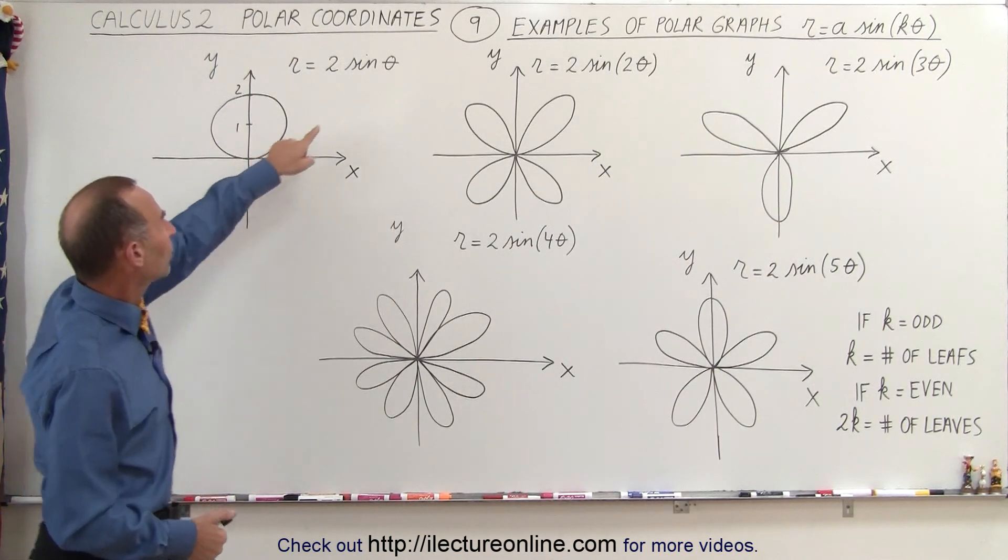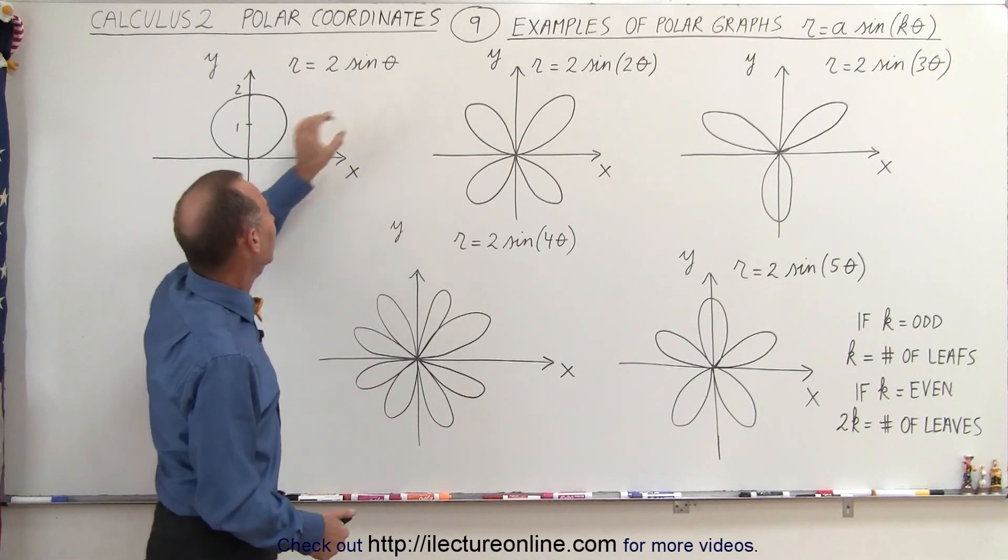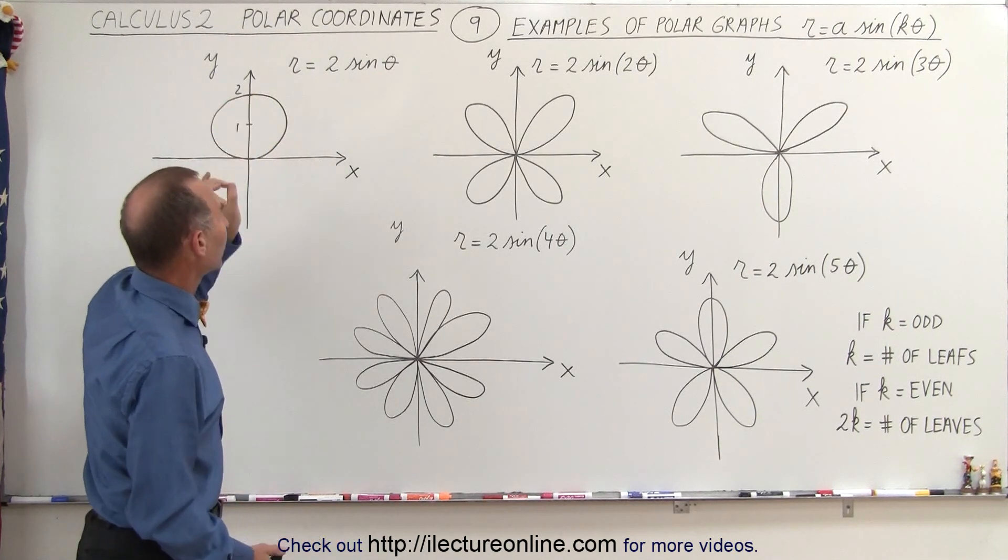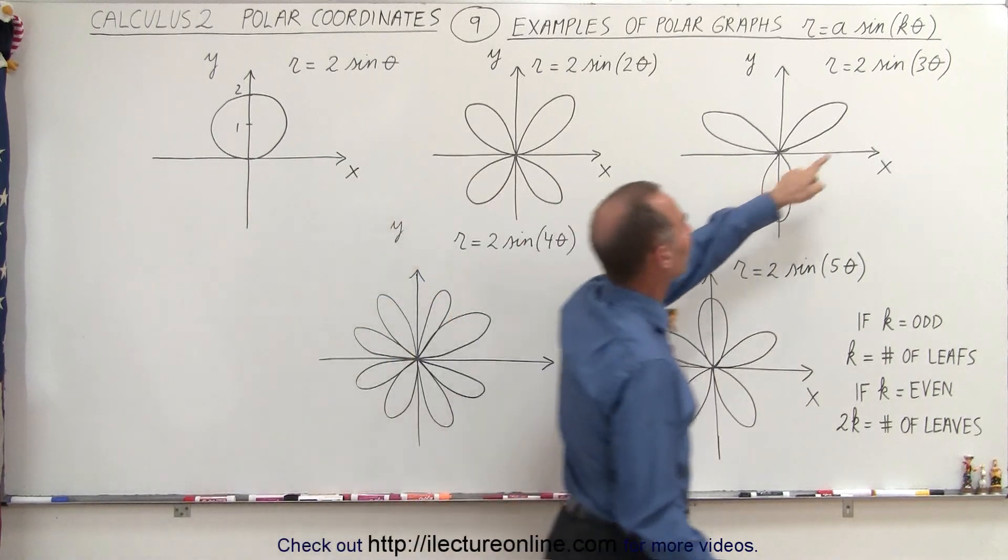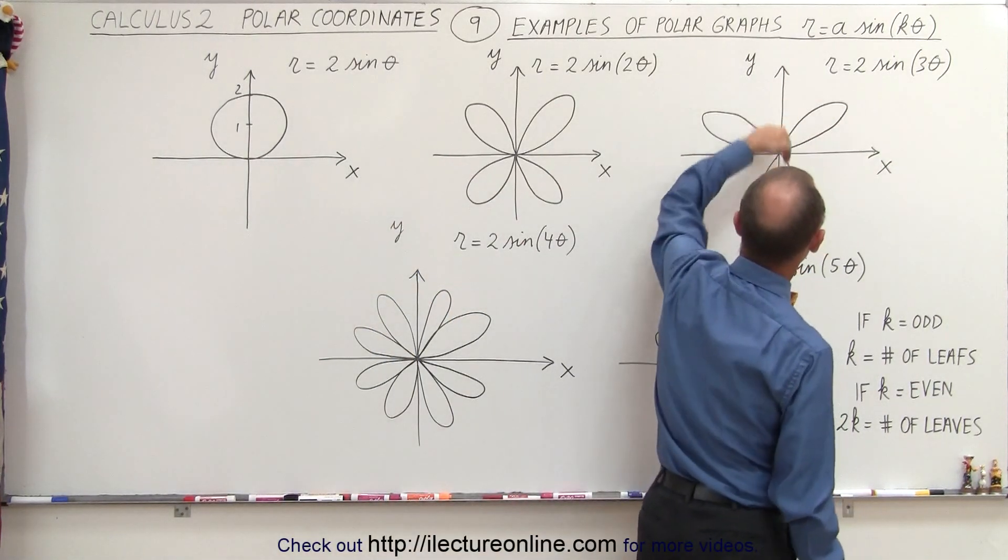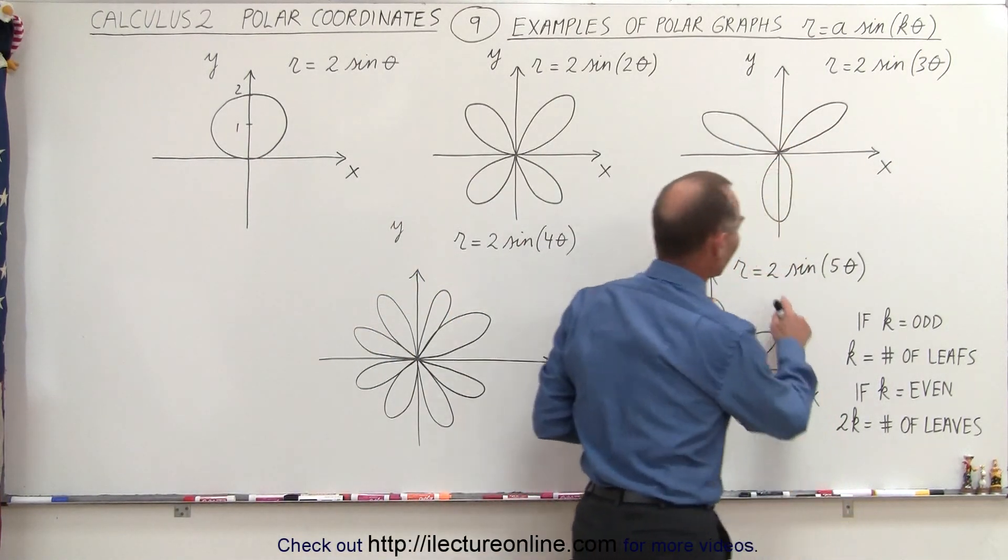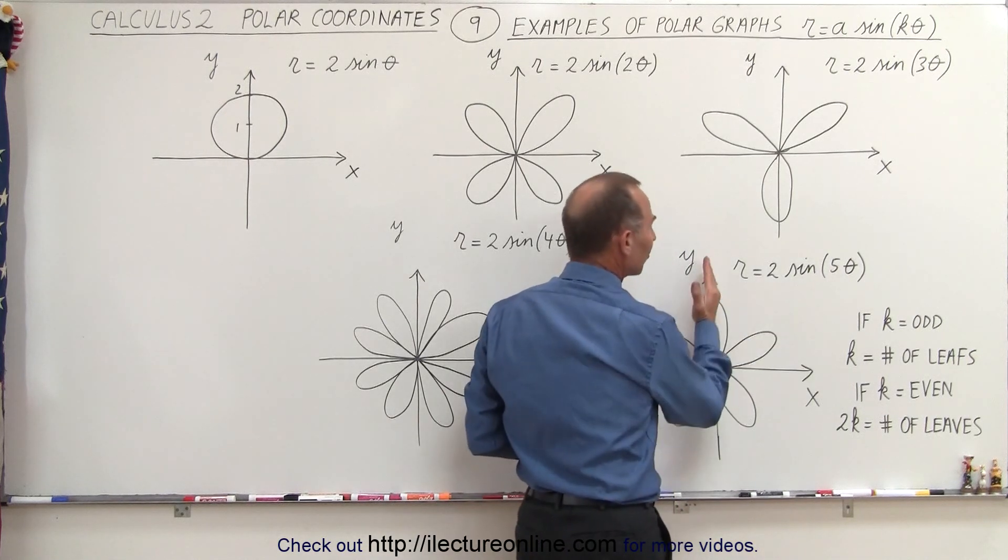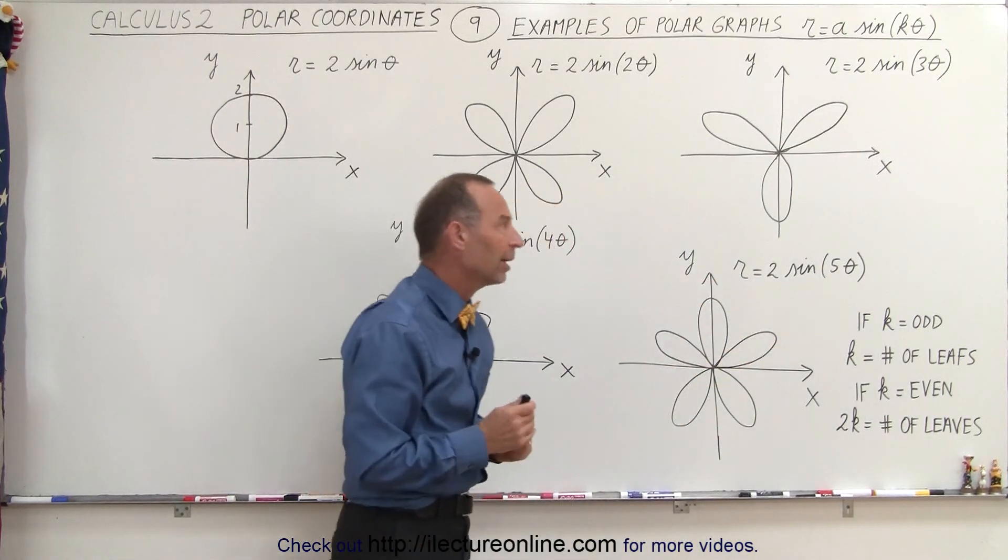For example, when the angle is sine of 1 theta, then the first leaf is directed straight upward. When it's the sine of 3 theta, one of the leaves is directly downward. When it's the sine of 5 theta, one of the leaves is directly upward and so forth. So you can see that pattern right there.